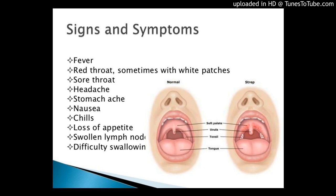Group B Strep Infection in Adults. While the rates of serious group B strep infections are higher among newborns than among any other age group, serious group B strep disease can occur in other age groups in both men and women. The sources of disease caused by group B strep bacteria are unknown. Group B strep bacteria are common in the gastrointestinal tract — the part of your body that digests food, including the stomach and intestines — of men and women, and may be a source of some infection.